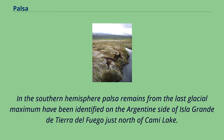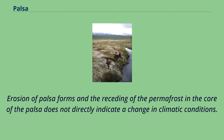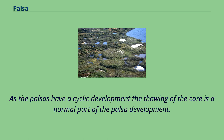In the southern hemisphere, palsa remains from the last glacial maximum have been identified on the Argentine side of Isla Grande, Tierra del Fuego, just north of Camille Lake. Remainders of Ice Age palsas are to be found also in high moors of Central Europe, such as Hohen-Venn in the German-Belgian border area. Erosion of palsa forms and the receding of the permafrost in the core of the palsa does not directly indicate a change in climatic conditions, as the palsas have a cyclic development and the thawing of the core is a normal part of palsa development.